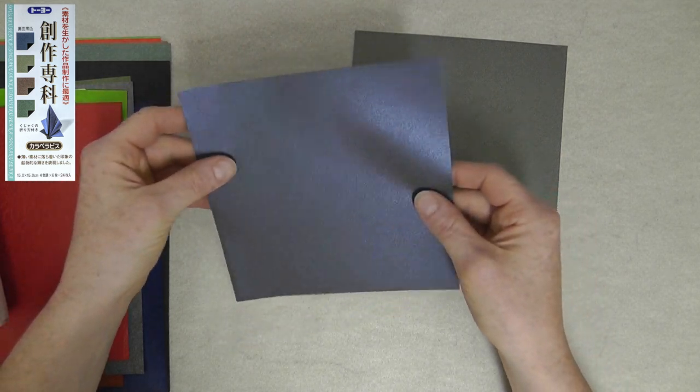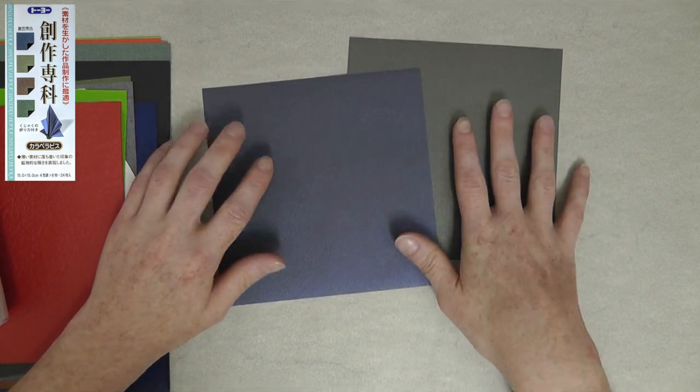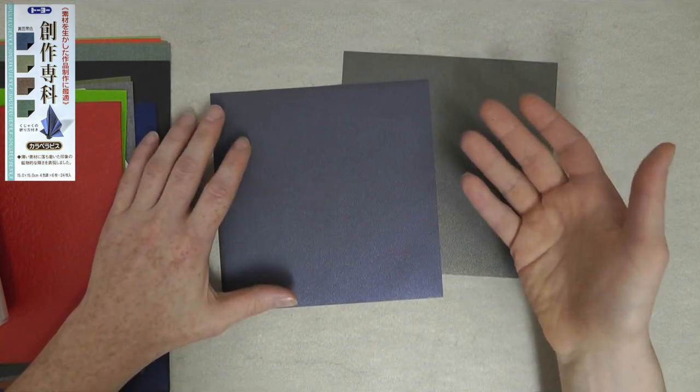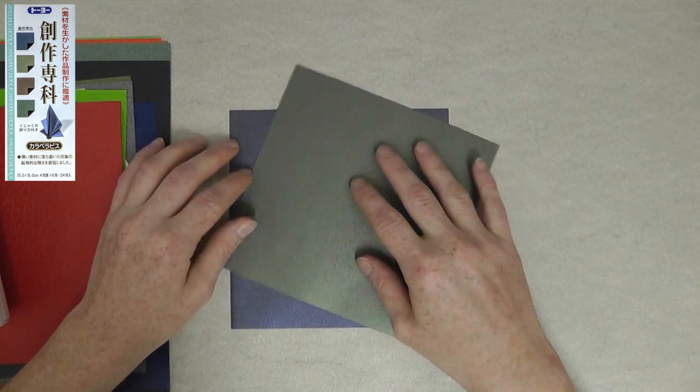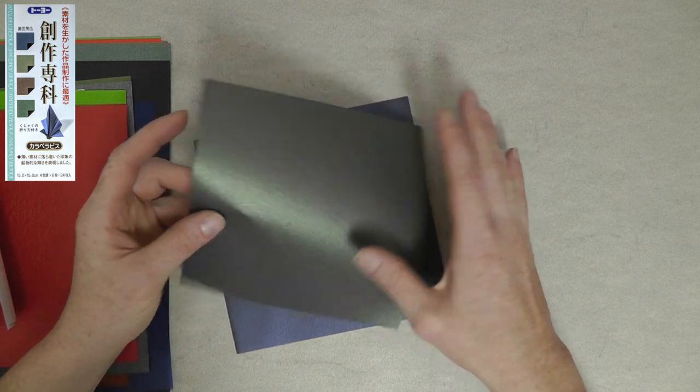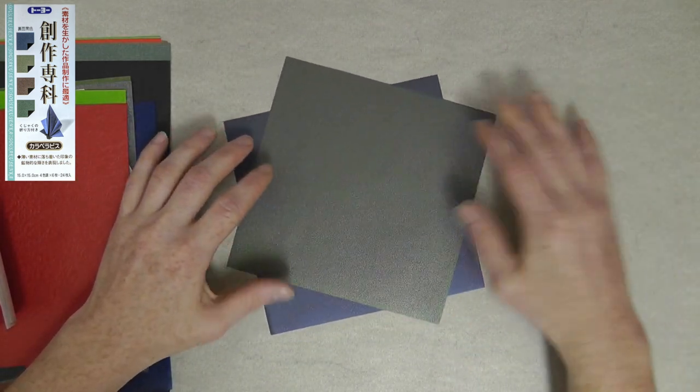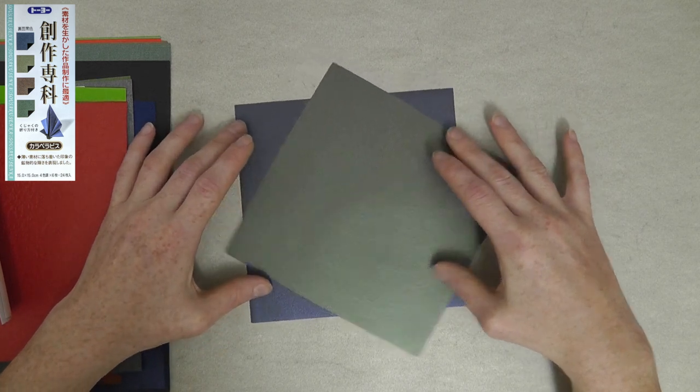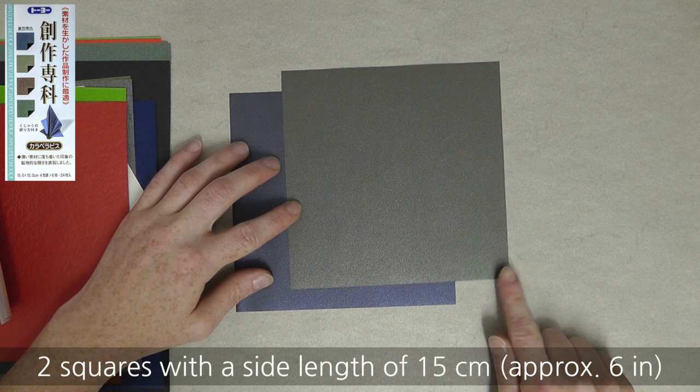Now, this paper, to me, is really well suited for folding beetles and butterflies and maybe birds. But of course, you can also fold other things that you think work well with this iridescent shine to it. You could, of course, do stars. That would work perfectly, too. Again, two sheets, and these have a side length of 15 cm.